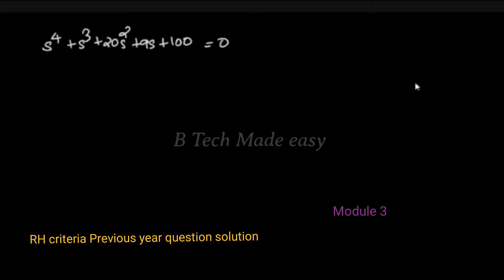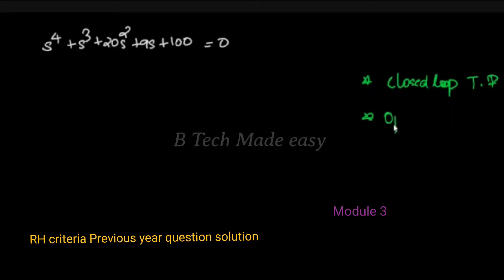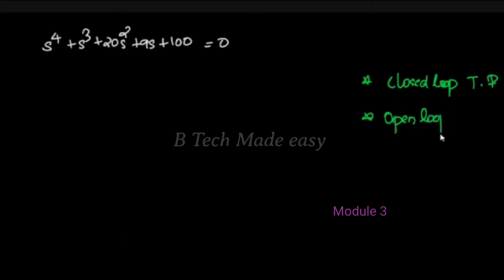Normally, there is a closed loop transfer function. Second, open loop transfer function. And third, the characteristic equation direct.